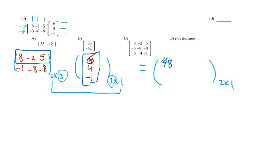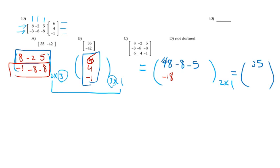Continuing: negative 2 by 4 is negative 8, and 5 by negative 1 is negative 5, so 48 minus 8 minus 5 equals 35. Then the second row: negative 3 by 6 is negative 18, negative 8 by 4 is negative 32, and negative 8 by negative 1 is positive 8. So negative 18 plus 8 is negative 10, and negative 10 minus 32 is negative 42. So the right answer is negative 42.